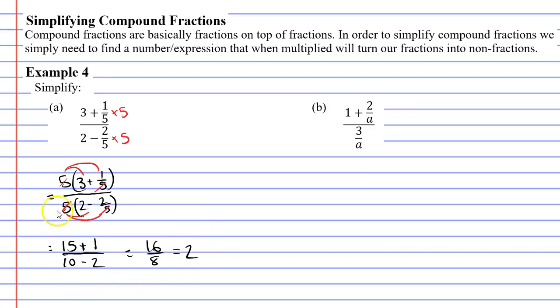Most of you have probably figured out why I decided to multiply by 5. It's because the denominators were both 5 for both fractions, and when I multiplied by 5 I cancelled those denominators and turned those fractions into whole numbers.